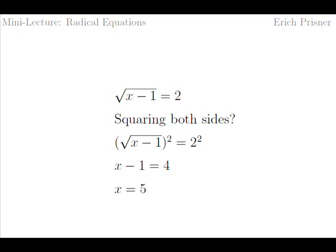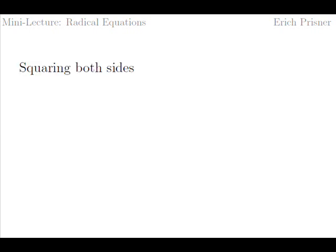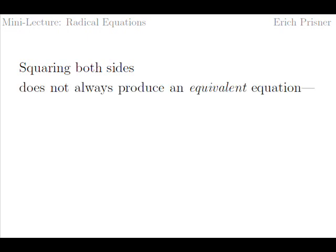We get x equals five. Plugging this into our initial equation shows us that five is indeed the solution. The square root of five minus one, or four, is indeed equal to two. Therefore, squaring both sides of an equation seems to be a valid change — one that replaces an equation by an equivalent equation, meaning one with exactly the same solutions.